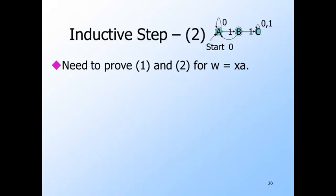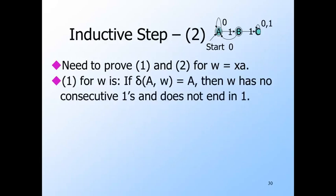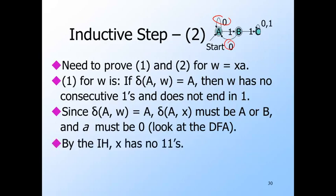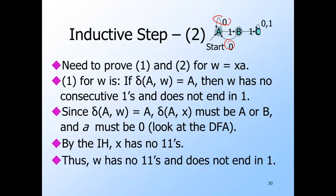For the inductive step, we assume W is a string of length at least one, and assume the inductive hypothesis is true for strings shorter than W. Let W be XA, where A is the last symbol of W and X is all the symbols up to but not including the last symbol. Since X is shorter than W, we assume the inductive hypothesis for X. For condition one: if delta(A, W) = A, then the only transitions into A are on input zero. So symbol A must be zero, and W does not end in one. These transitions to A are only from A and B, so X must get us to A or B. By the inductive hypothesis, X has no consecutive ones. Thus W = X followed by zero also has no consecutive ones and does not end in one.